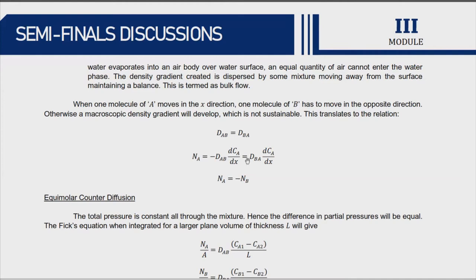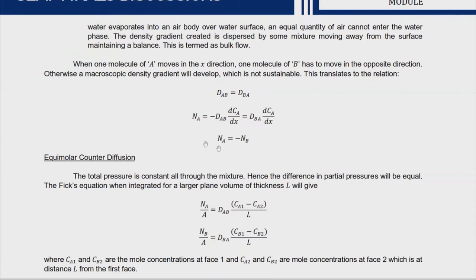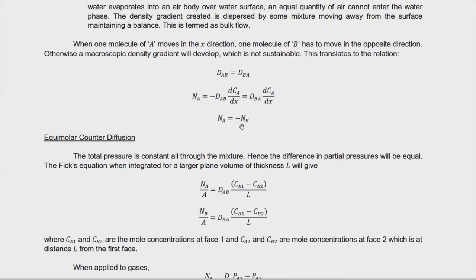Visualizing this opposite movement, the expression for component B is just the negative of the original expression for component A — you interchange the letters. This means B is flowing toward A, and the concentration gradient remains essentially the same in magnitude. Therefore, the rate of diffusion for A is the negative of the rate of diffusion for B: N_A = −N_B.